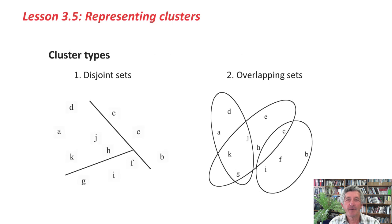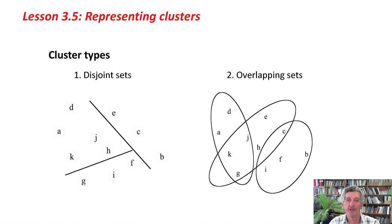There are different kinds of clustering algorithms that produce different sorts of representations of clusters. One way of thinking about clusters is to imagine disjoint sets — we take the instance space and divide it into sets such that each part of the instance space is in just one cluster. Or the clusters might overlap, as shown in the second picture.